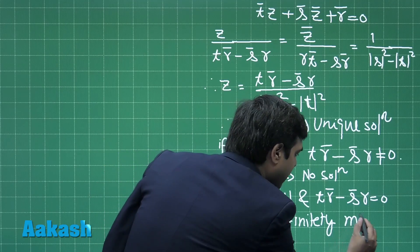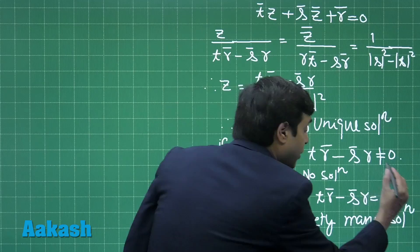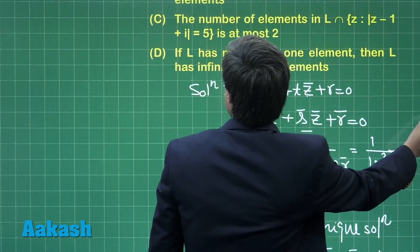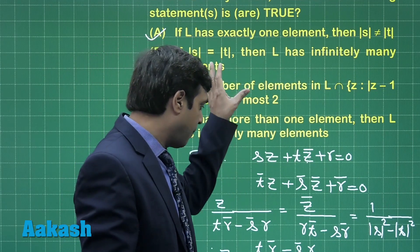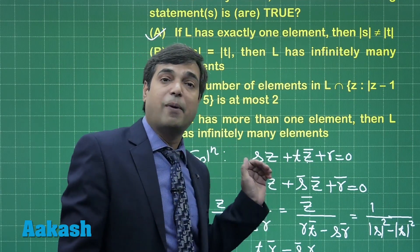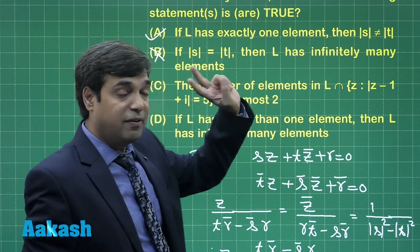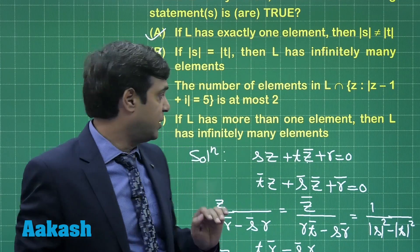If |S| is equal to |T| along with Tr̄ minus S̄r also 0, then we may have infinitely many solutions. This time we have infinitely many solutions. This is clear. So option B is saying just about |S| and |T|, it is not talking about the term Tr̄ minus S̄r, meaning this is not correct because with this constraint we have two possibilities: either no solution or infinitely many solutions.